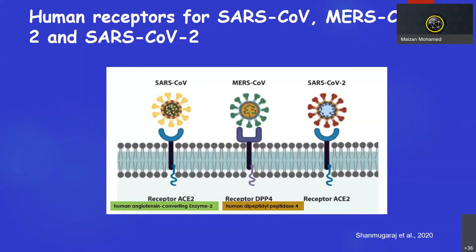The human receptor for SARS-CoV and SARS-CoV-2 is ACE2. These two viruses will recognize the ACE2 receptor for binding to the host cell. Whereas MERS-CoV recognizes the human receptor DPP4 — human dipeptidyl peptidase 4 — on the human host cell. So SARS-CoV-2 and SARS-CoV-1 actually use the same receptor binding on the human host cell, which is ACE2.